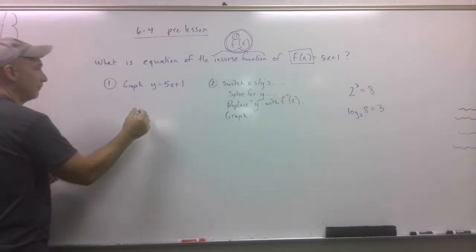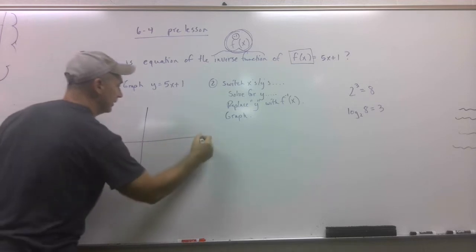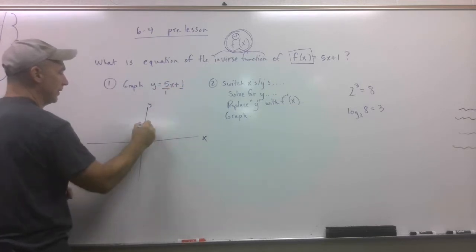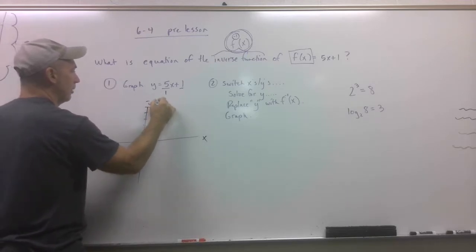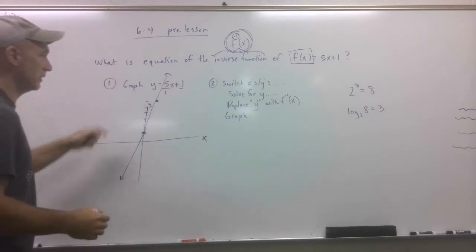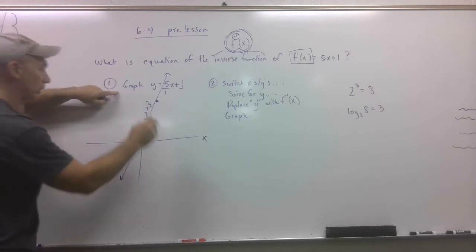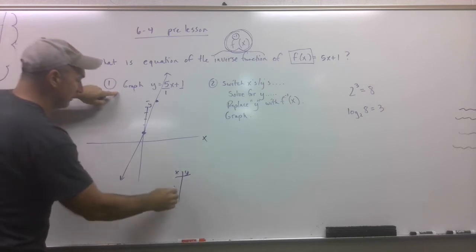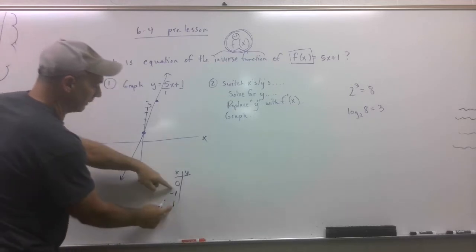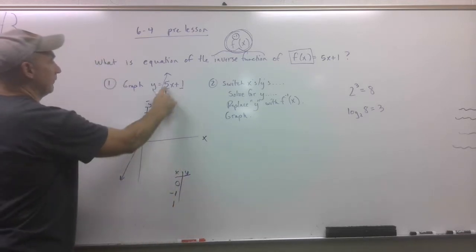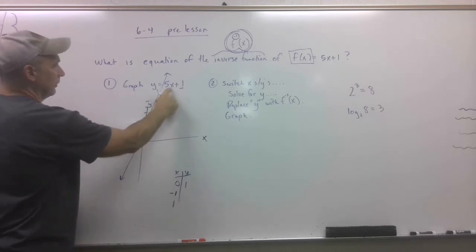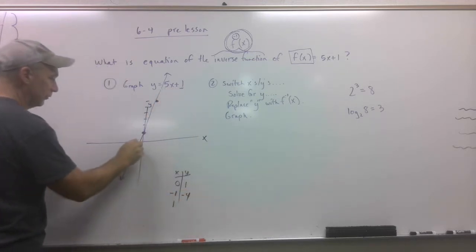I'm going to give you a visual image of what's going on. My y-intercept is 1, and then I go up 5 from there — 1, 2, 3, 4, 5. Connect the dots. Now let's take a couple of x-values like 0 and negative 1. Plug 0 in: 5 times 0 is 0, plus 1 is 1 — we knew that. Plug in negative 1: 5 times negative 1 is negative 5, plus 1 is negative 4, so the point is (−1, −4).